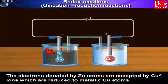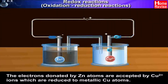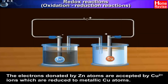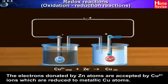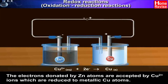The electrons donated by zinc atoms are accepted by Cu2+ ions, which are reduced to metallic Cu atoms. Cu2+ plus two electrons gives Cu. This is a reduction reaction.